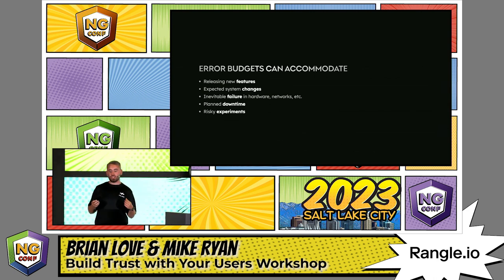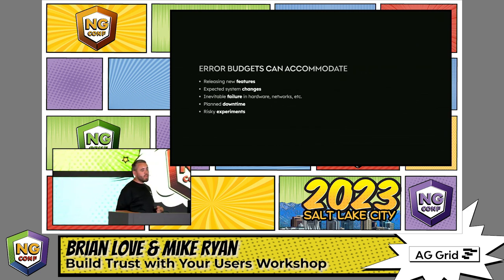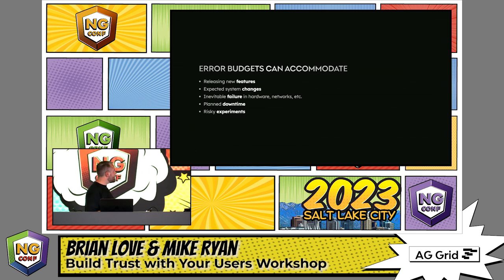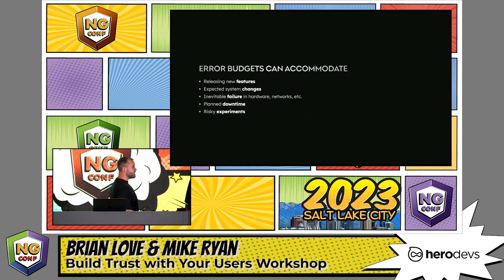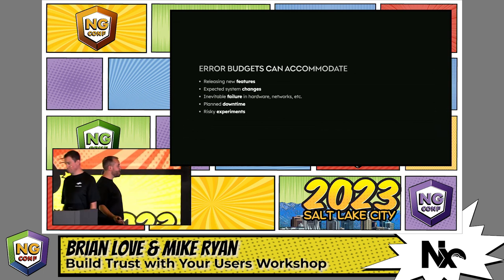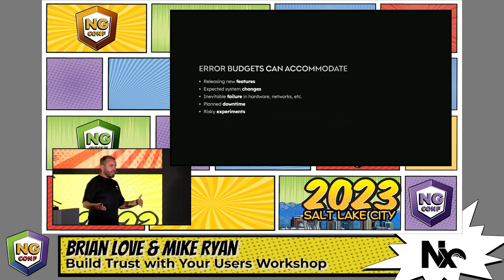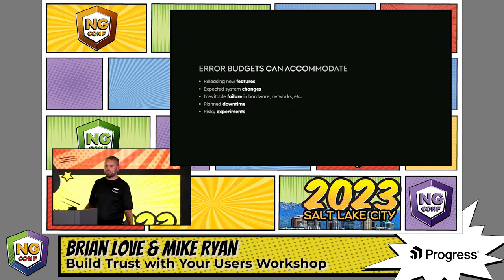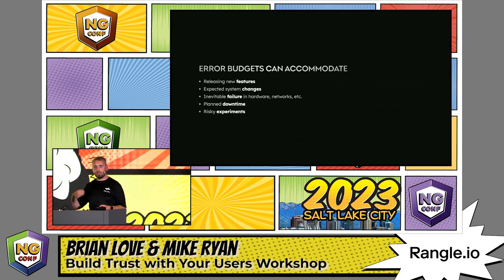Sometimes things just break, so it's a good idea to keep some slack in your budget allocations for emergencies and unforeseen circumstances — like an AWS outage. If you have to take a web app down for essential maintenance, you can pay for it with downtime from your error budget. Other things you might spend budget on: releasing new features with high outage risk, expected system changes, inevitable hardware or network failure, planned downtime, and risky experiments — like testing whether making something slower actually makes users unhappy — and feeding that back into your SLO process.